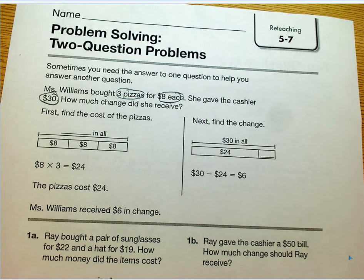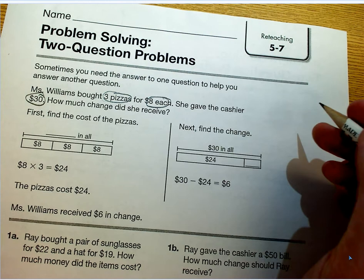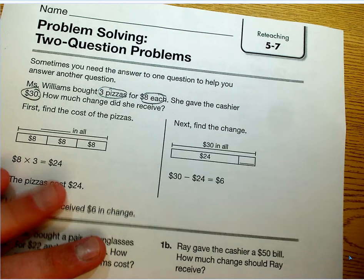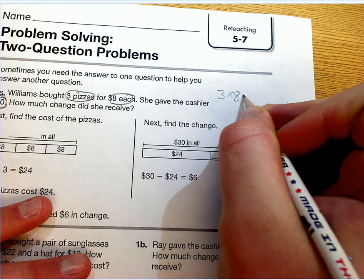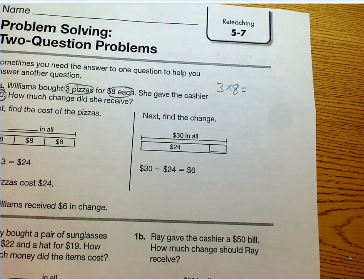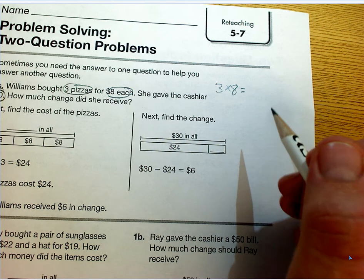Step one of this problem is going to be figure out how much money that she needs to spend on pizza. So that problem is going to be three times eight, and we need to figure that out. So right now we need to use one of the strategies to figure out three times eight. Now we know strategies for zero, one, two, five, and nine at this point, and we don't know any for three or eight.